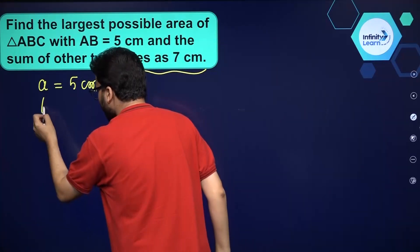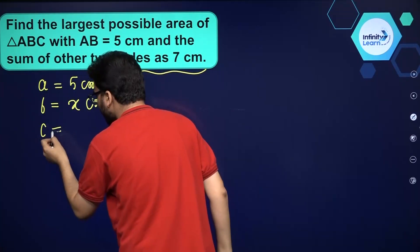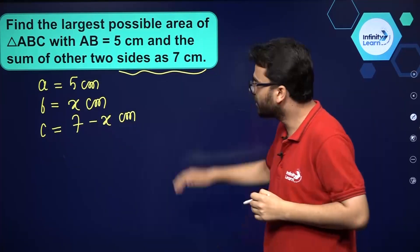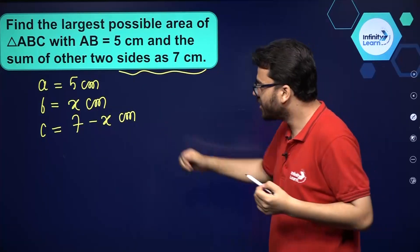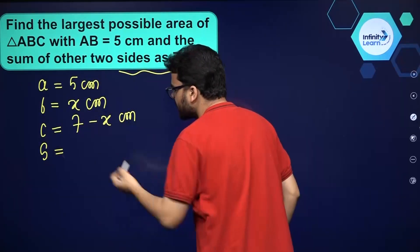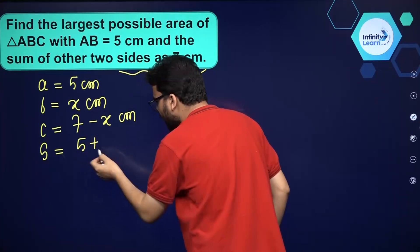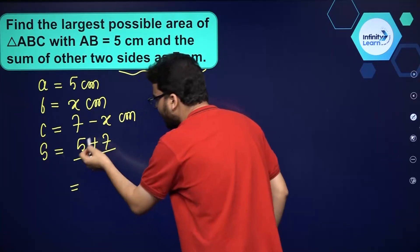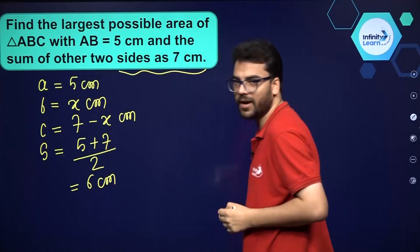Suppose side b is x centimeters, so the length of the third side c will be 7 minus x centimeters, since the sum of the other two sides is 7 centimeters. To use Heron's formula, we need the semi-perimeter first. Semi-perimeter S equals perimeter divided by 2, which is the length of one side plus the sum of the other two, divided by 2 — that is 12 divided by 2, equal to 6 centimeters.